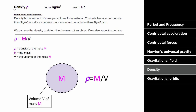Sometimes when solving gravitational problems, you'll be given the density instead of the mass. The density is the amount of mass per volume for a given material. The symbol for density is the Greek letter rho, and you can find it by taking the mass divided by the volume. The units of density are kilograms per meter cubed. It's not a vector since it has no direction, but it lets you solve for mass — if you know the density, the mass is the density times the volume.